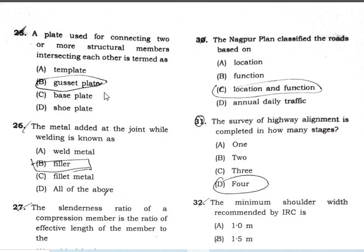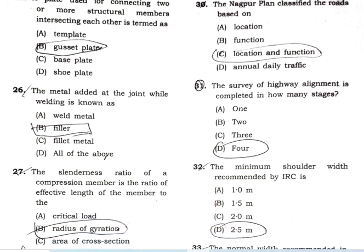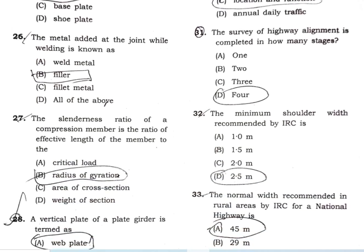The metal which is added to the joint while welding is called the filler metal — all of the above options apply, and filler metal is the correct answer. The slenderness ratio is the effective length divided by the radius of gyration.